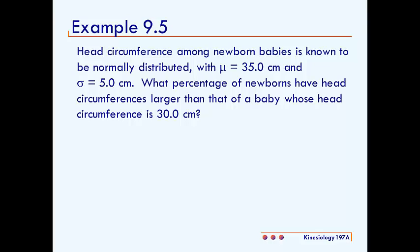In this video we'll be solving example 9.5. This one reads: head circumference among newborn babies is known to be normally distributed with a mean of 35.0 centimeters and a standard deviation of 5.0 centimeters. What percentage of newborns have head circumferences larger than that of a baby whose head circumference is 30 centimeters?